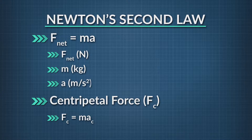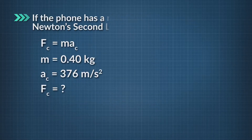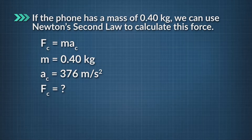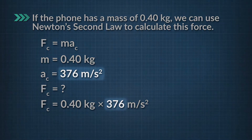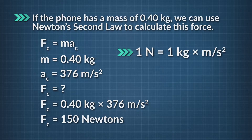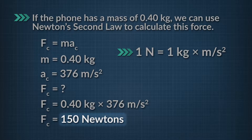This force causes the phone to have centripetal acceleration, a sub C. Centripetal force equals mass times centripetal acceleration. So if the phone has a mass of 0.40 kilograms, we can use Newton's second law as it relates to circular motion to calculate this force. We take the mass, 0.40 kilograms, and multiply it by the centripetal acceleration, 376 meters per second squared, and find that the centripetal force provided by the string was 150 newtons.